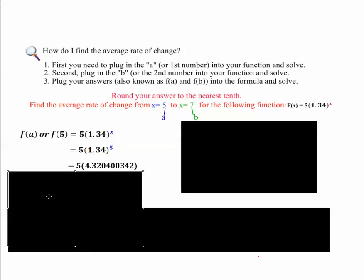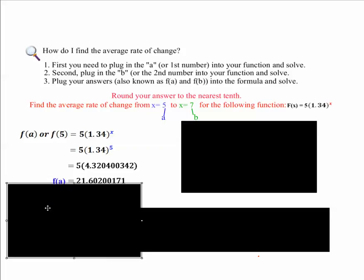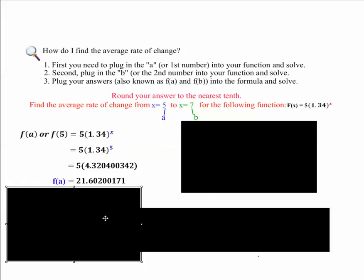If you round in the middle, you're actually going to change the value of your problem and you're going to get the wrong answer. And then you multiply those two together and you find out that F(a) is this answer. You're going to do the same thing for the F(b), which is 7.